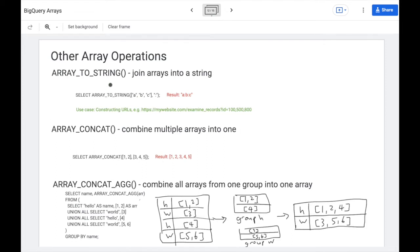Finally, there's array to string, which joins arrays into a string. For instance, if you have an array of a, b, c, and a delimiter, you can create a string out of that. And a typical use case is constructing URLs. ArrayConcat will combine multiple arrays into one. Should be pretty straightforward. But there's actually also an ArrayConcatAgg function, which you can use during aggregation.